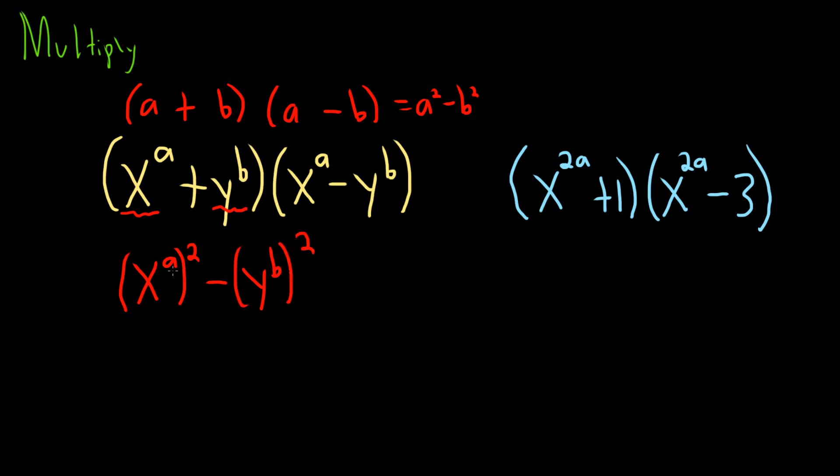And now properties of exponents say you can just multiply these. So 2 times a is 2a, minus, and then 2 times b is 2b. And that would be it.